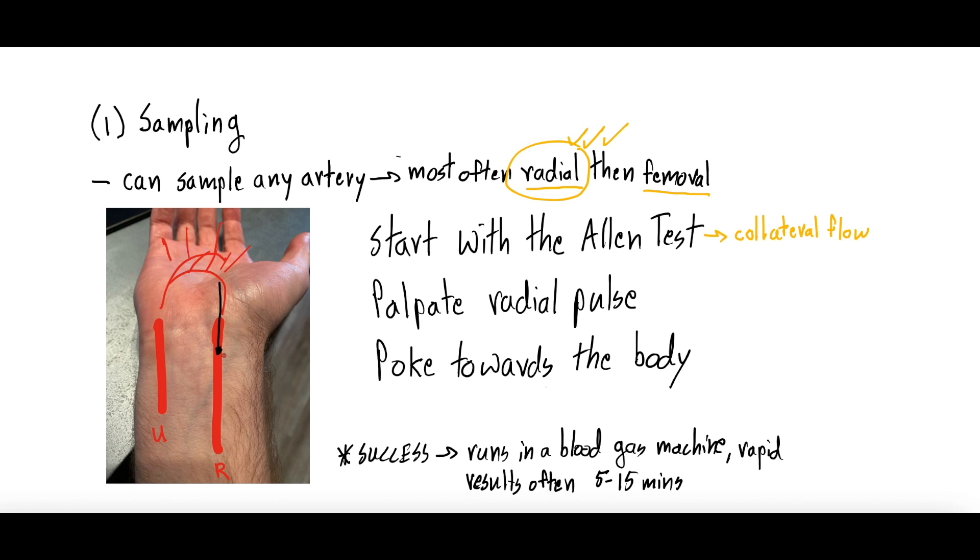If the hand doesn't pink up, it means that the ulnar artery isn't giving the hand enough blood flow, and then that's very high risk because if you were to damage the radial artery during the ABG draw, there would not be enough blood flow to the hand and you could have ischemia or lack of blood flow to that hand. So start with the Allen's test to gauge for collateral flow through the ulnar artery. You'll then palpate the radial pulse in the wrist right around this region, remember by the thumb there.